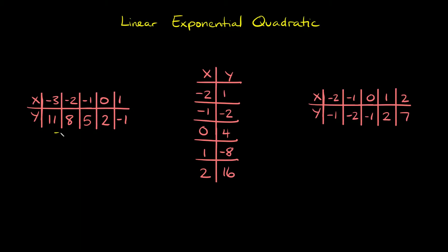To get from 11 to 8 you have to subtract 3. To get from 8 to 5 you subtract 3. To get from 5 to 2 you subtract 3, and then from 2 to negative 1, again subtract 3.